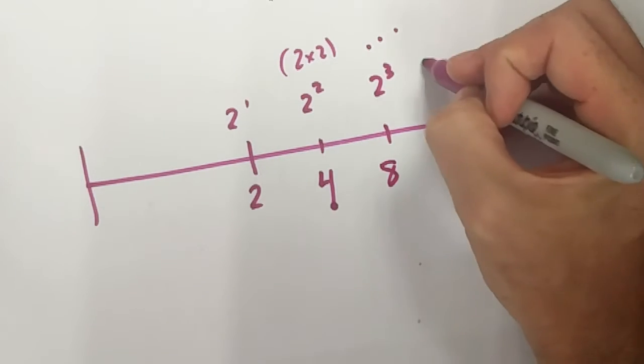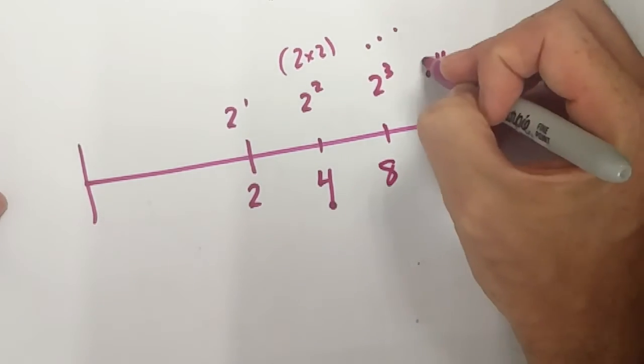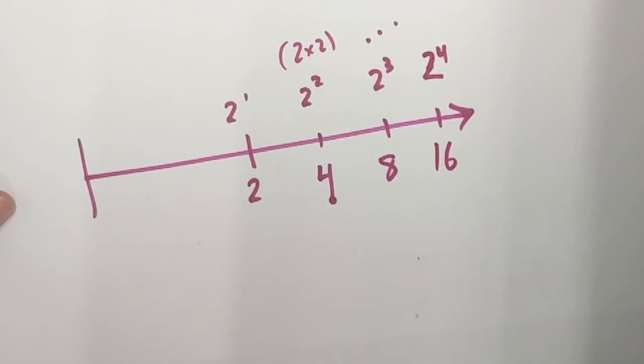And so on. I have 2 to the power of 4. That looks like 24. 2 to the power of 4, and that's the same as 16.